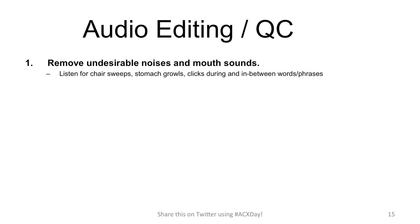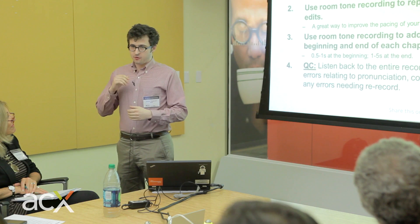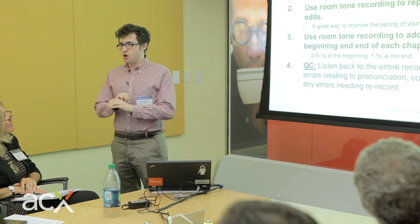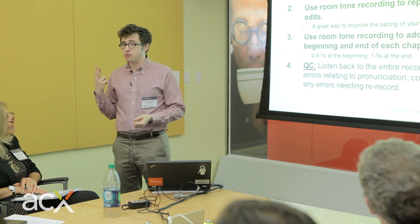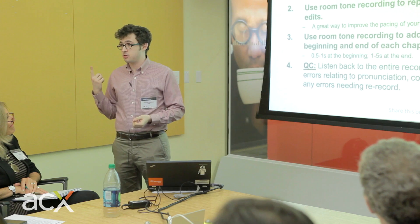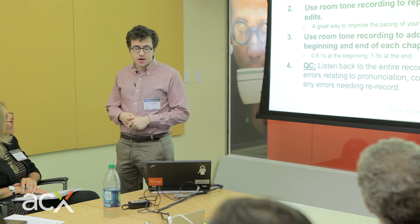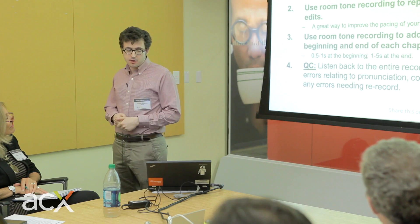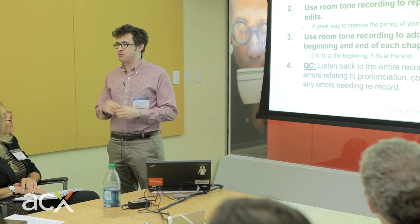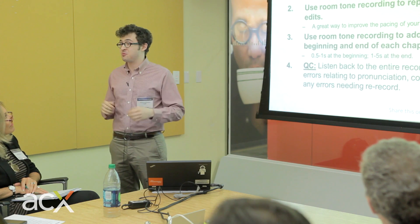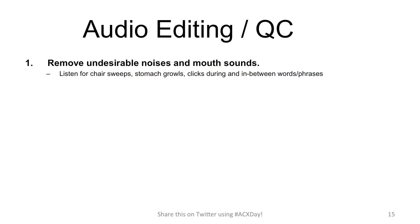The first thing you do is remove all the undesirable mouth sounds and noises in the audio. There's no way to have a completely noise-free recording, especially when there's only two things in your audio, which is your narration and your room. You should listen for chair squeaks, stomach growls, and all the weird little sounds your mouth makes when there's a microphone six inches away from it.